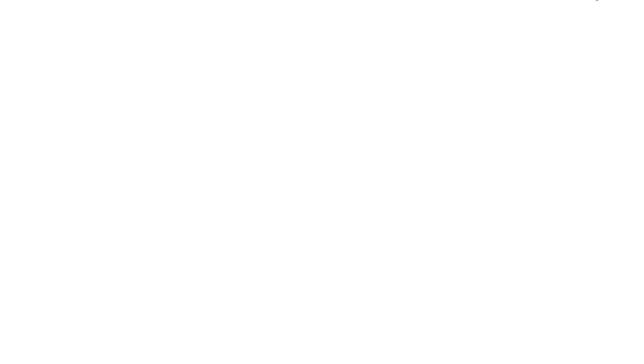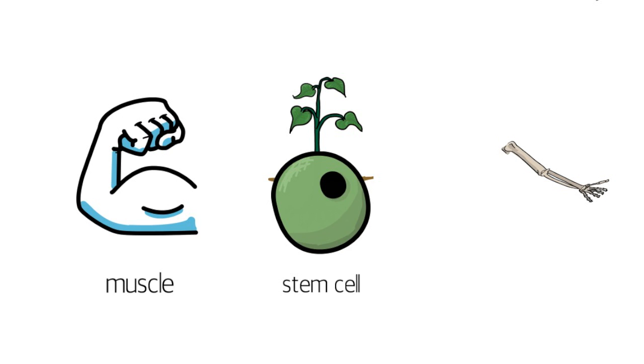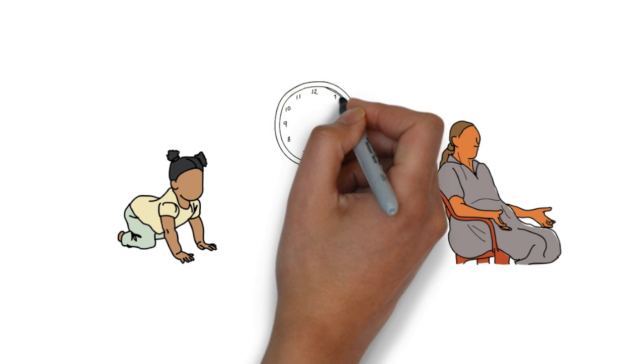Once your cells reach this limit, they begin to malfunction and cause tissue, stem cell, and bone degeneration. As you can imagine, telomeres are a huge part of current research on aging.